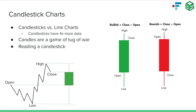Now we can get into a little bit about candlesticks. Candlesticks are used on price charts to signify one period of price data. That period could be one day on a daily chart, one year, or one minute. Why do we use candlesticks? Candlesticks provide us with four times as much data as a simple line chart. If you use Apple charts or Robinhood, you're probably used to seeing line charts, which just plot the closing price for each period. But a candlestick shows us the open price, the close price, the high, and the low of the day — much more data in a quick and easy-to-read format.